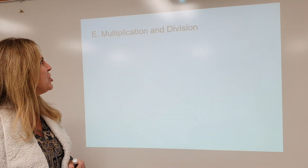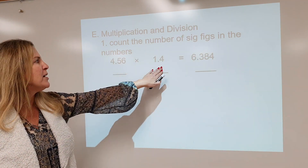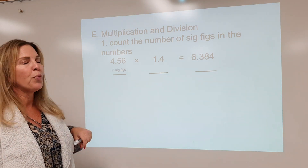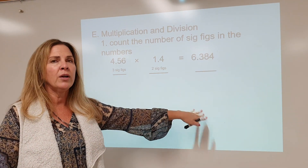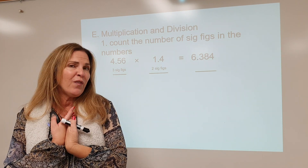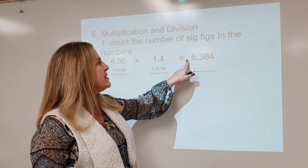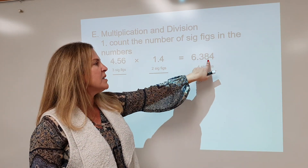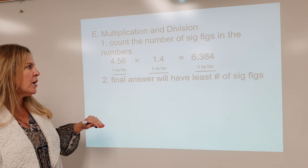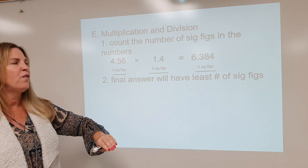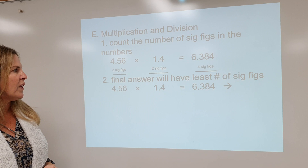For multiplication and division, we are going to be counting the number of significant figures in our measurements. I have two measurements here. This measurement has three significant figures and this measurement has two significant figures. When you put that in your calculator, it doesn't know how many significant figures you want, so you get a spew of numbers. When dealing with multiplication and division, our final answer will have the least number of significant figures of the least significant measurement. So my final answer should have only two significant figures.